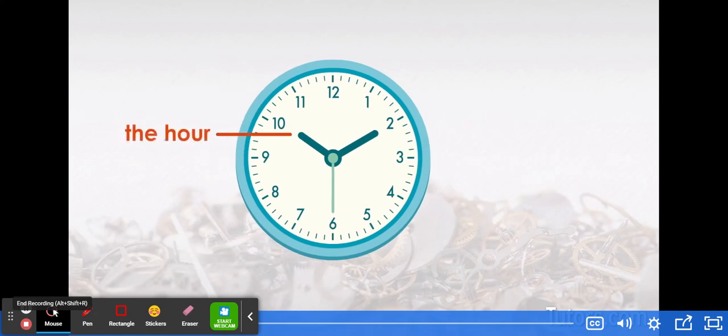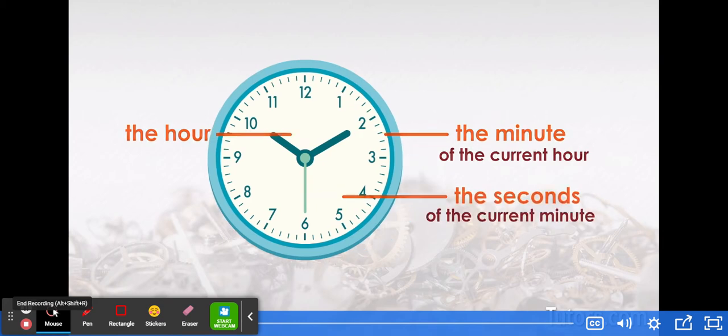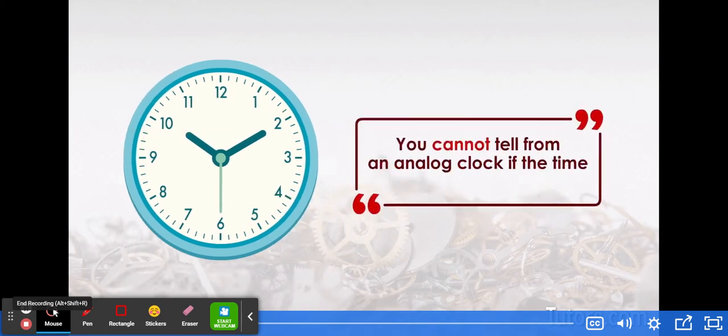The small hand tells you the hour, the big hand tells you the minute of the current hour, and the thinnest hand indicates the seconds of the current minute. You cannot tell from an analog clock if the time is morning or afternoon.